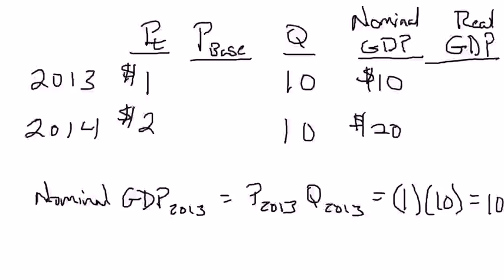Just as a reminder, the previous video pointed out that what we want with our measure of the size of the economy is the total amount of stuff produced. And in the example we were working with, the total amount of apples and oranges produced in 2013 and 2014 is exactly the same. So ideally our measure of the size of the economy ought to be exactly the same for both years. The problem is that if we use market prices to value goods and services, our measure of the size of the economy can change if prices change even if quantities remain constant.